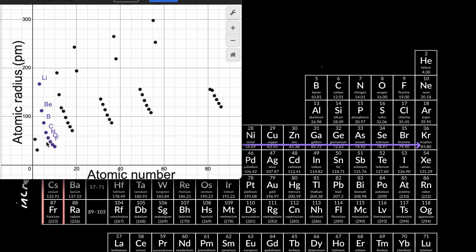Now, if we go to period three, we see the same trend again. So we see confirmed in the actual data that trend, that as you go from left to right on a period, the radii or the radius decreases.